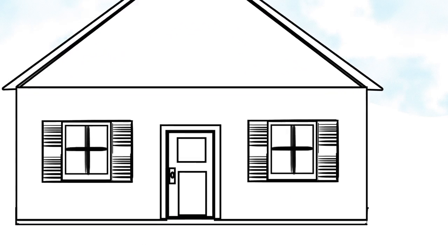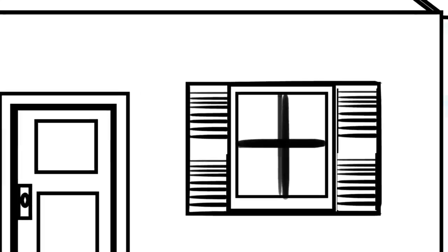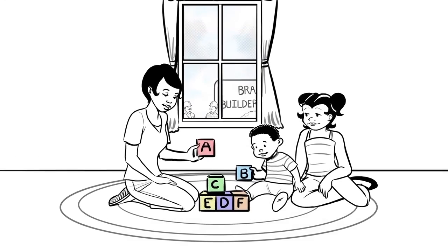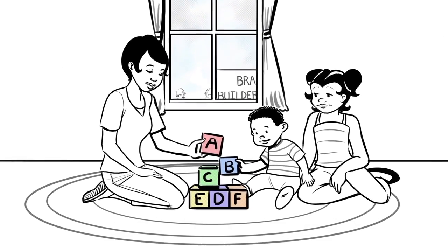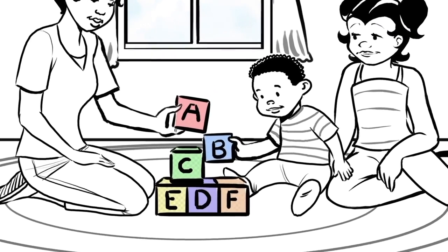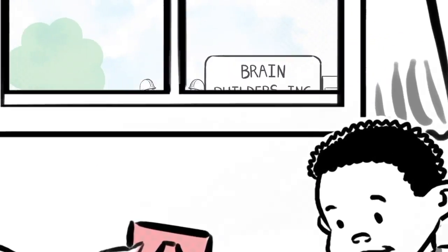Biologically, the brain is prepared to be shaped by experience. It's expecting the experiences that a young child has to literally influence the formation of its circuitry.